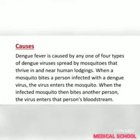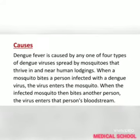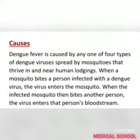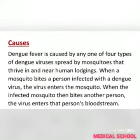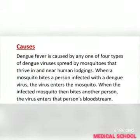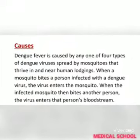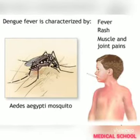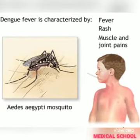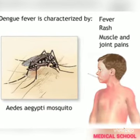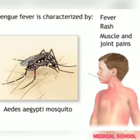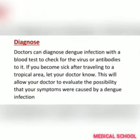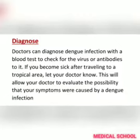Dengue fever is caused by any one of four types of dengue viruses spread by mosquitoes that thrive in and near human lodgings. When a mosquito bites a person infected with the dengue virus, the virus enters the mosquito, and when it bites another person, the dengue spreads.